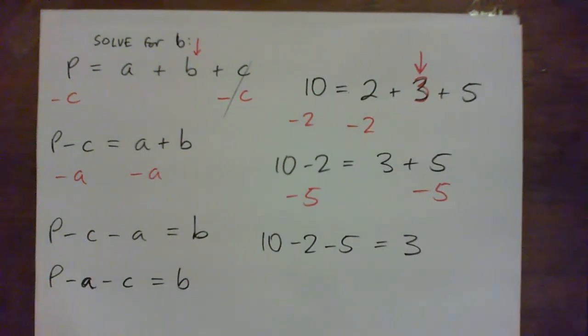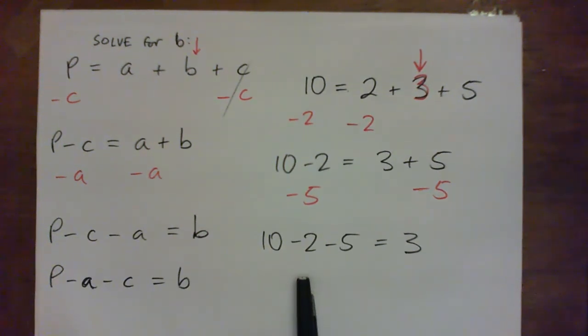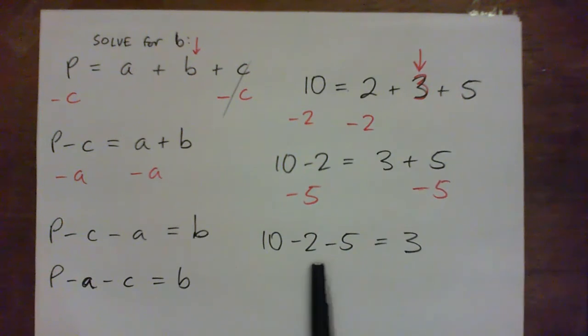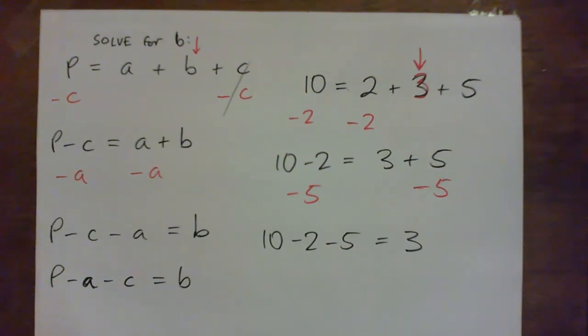Now check if that's correct. Is that correct? Because 10 minus 2 is 7. And 7, or sorry, 10 minus 2 is 8. And 8 minus 5 is 3. Right?